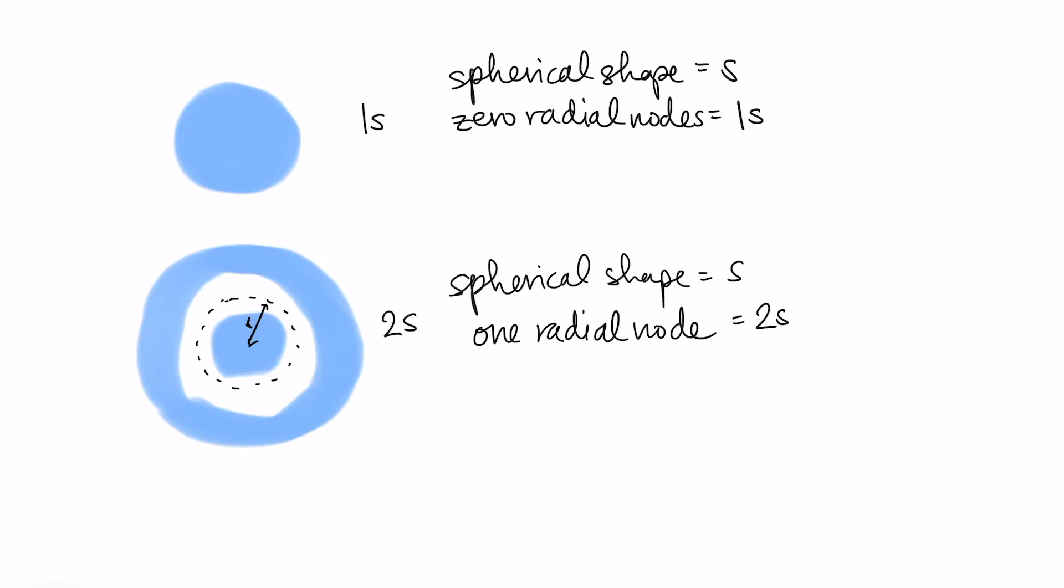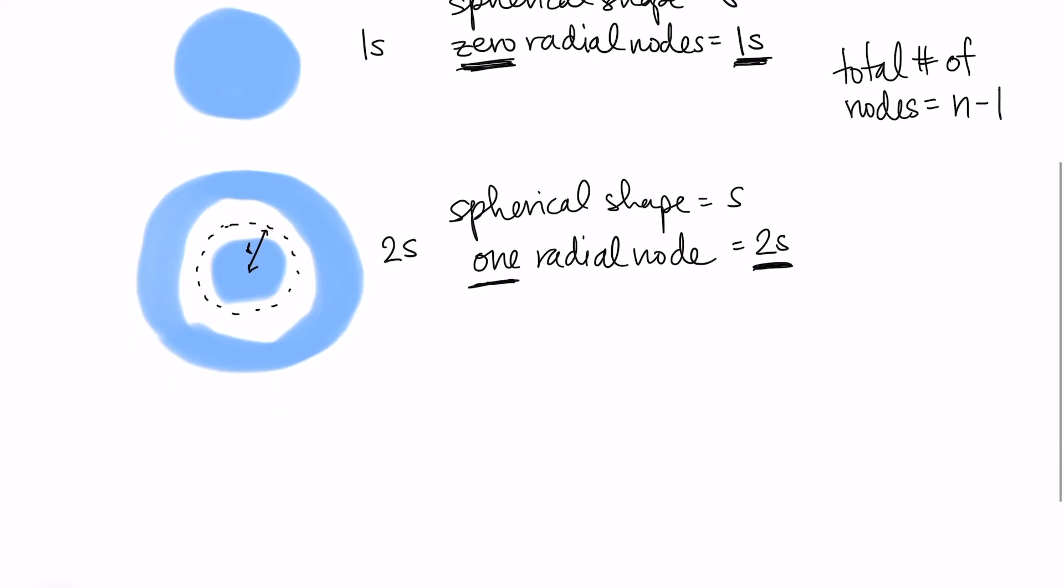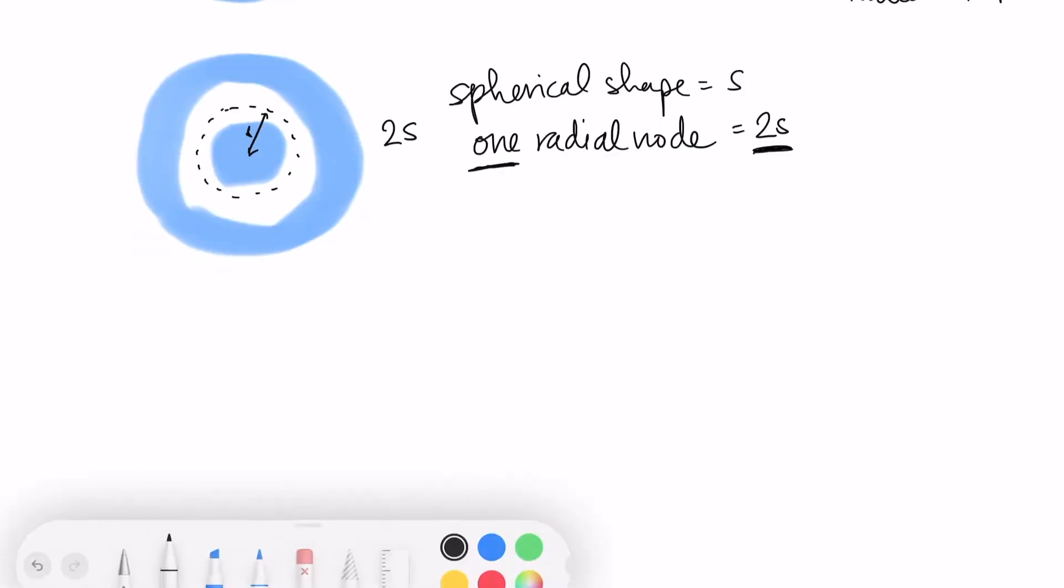Now there's some general rules about nodes, and that is the total number of nodes is going to be n minus 1. So in the 1s orbital I have zero nodes. In the 2s orbital I have one node, n minus 1. Now in the second energy level we also have p orbitals. So let's talk about a p orbital.